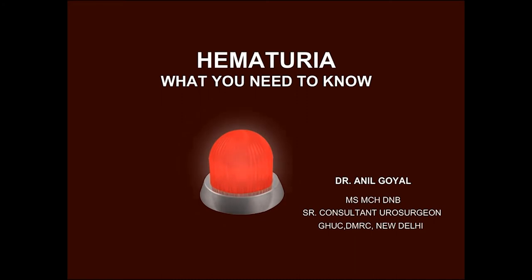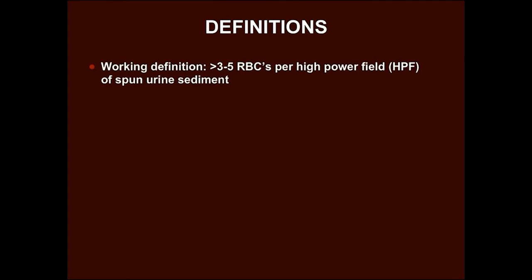This module provides information about hematuria and its management. Hematuria is defined as presence of more than 3 to 5 red blood cells per high power of urine sediment in three consecutive centrifuged specimens obtained at least one week apart.